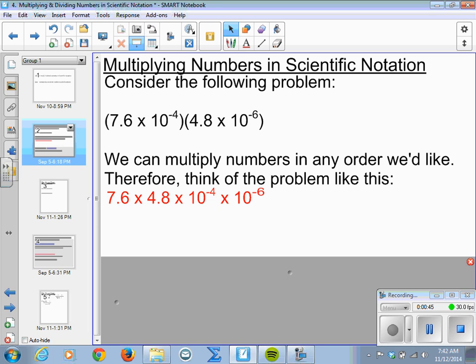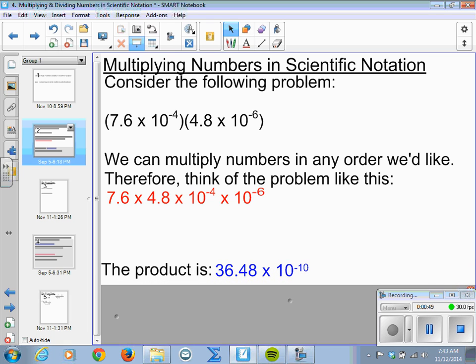So multiplying 7.6 times 4.8 will give us 36.48. And then the last two numbers, the tens, well, we know when we multiply, we add exponents. So negative 4 plus negative 6 is negative 10.